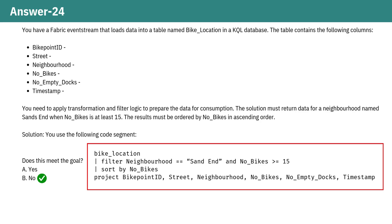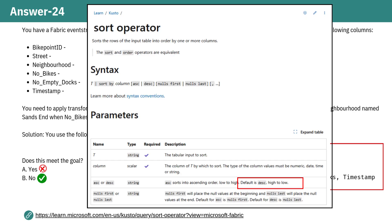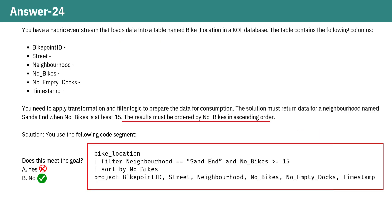Why not? In KQL, when you use sort by without explicitly stating the order, it defaults to descending order, not ascending. Since the question specifically asked for the data to be sorted in ascending order by Number of Bikes, and that wasn't mentioned in the query, it fails to meet the requirement.